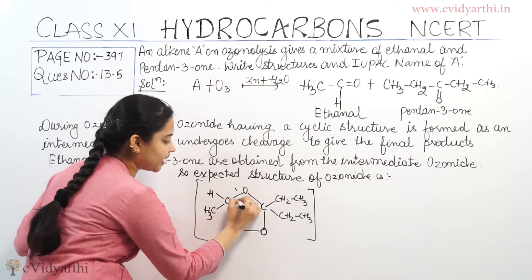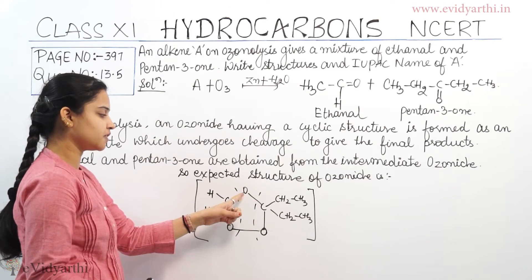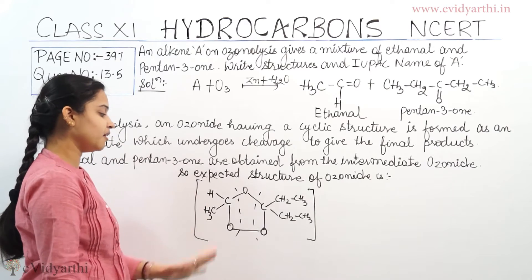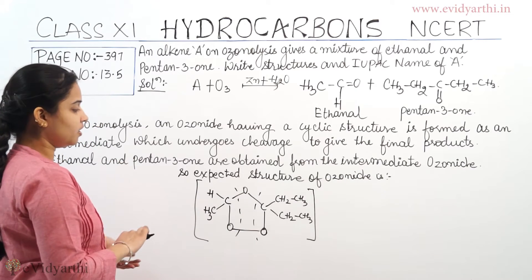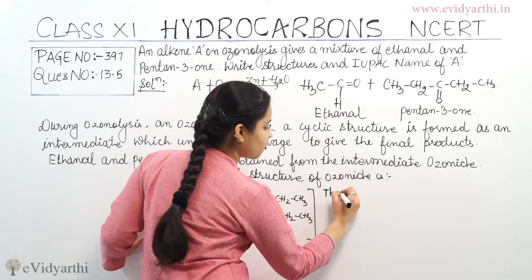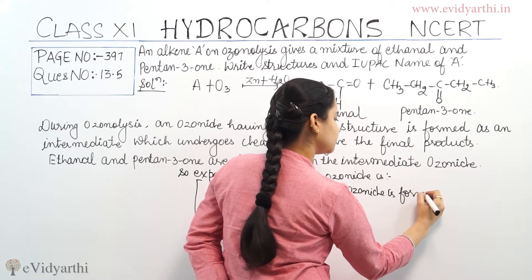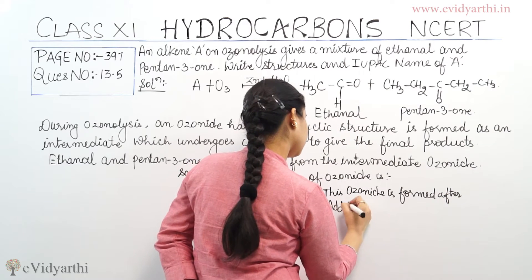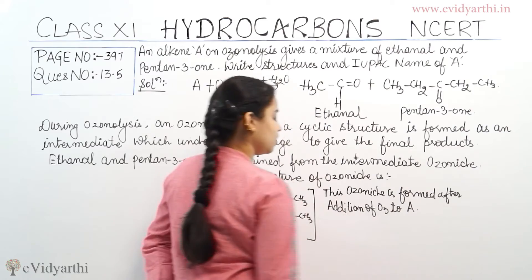So when this ozonide breaks up — when it is cleaved by the addition of zinc and water — we get ethanal from one side and pentan-3-one from the other side. That means this ozonide is definitely formed. This ozonide is formed after the addition of ozone to alkene A.